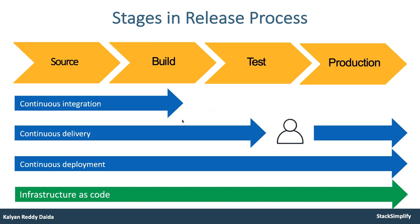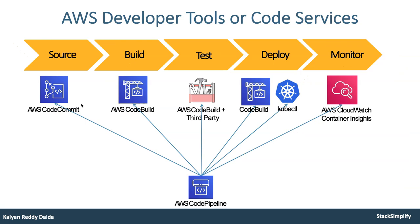Then we will move on to the DevOps section and understand the release processes — source, build, test, and production — as well as continuous integration, continuous delivery, continuous deployment, and infrastructure as code concepts. We'll then implement DevOps concepts in AWS in relation with Elastic Kubernetes Service using Code Commit, Code Build to generate artifacts, deploy to the EKS cluster using kubectl and Code Build combination, and monitor applications using CloudWatch Container Insights.